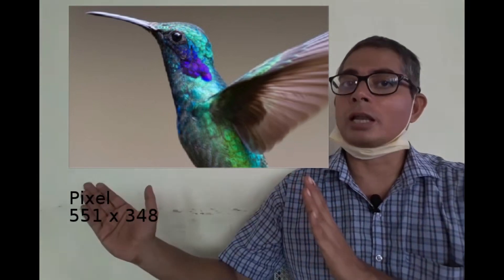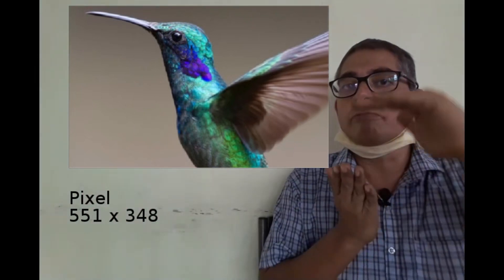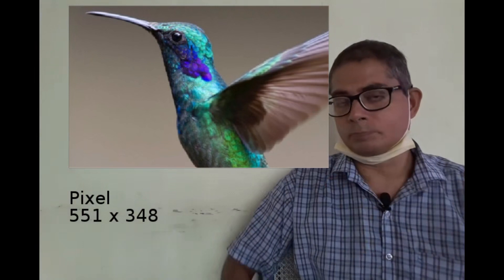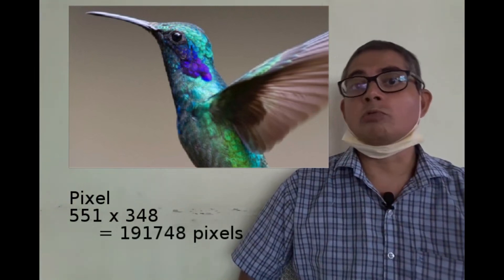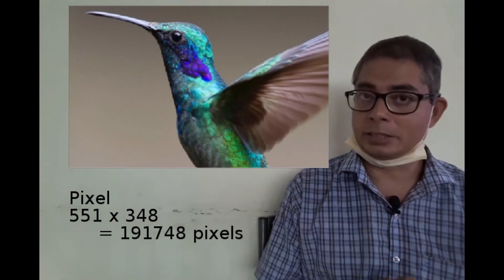551 columns and 348 rows. So that means we have got 191,748 pixels in all.